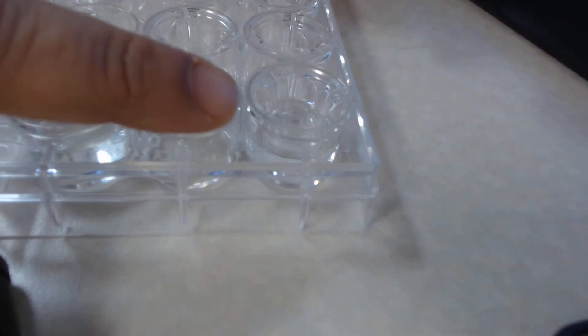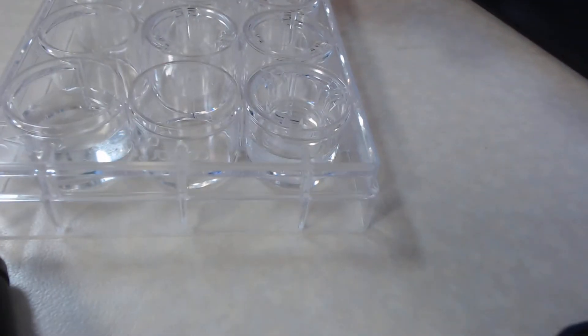First, I added—this is a Corning 3460 12-well transwell system. I added 500 microliters on top of the insert and 1.5 ml inside the well of the well plate.